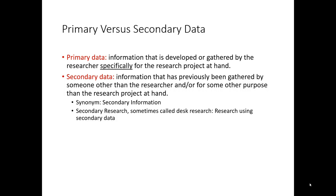Secondary data, on the other hand, is information that has previously existed, gathered by someone other than the researcher or for some other purpose. Which means you could have actually conducted a primary research project at some point, then realized later you could use some of that data to solve a new marketing research problem. What was once primary data now becomes secondary data.